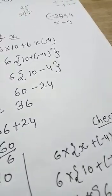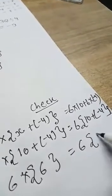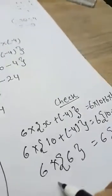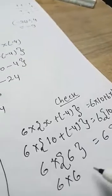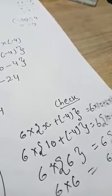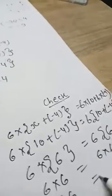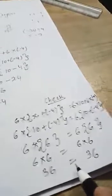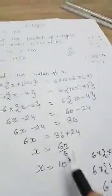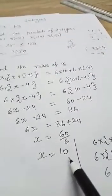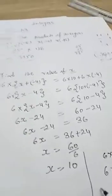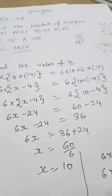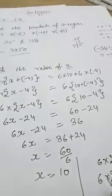6 multiply 6 is equal to 36. Left hand side and right hand side, both sides same answer. So your answer, find out value of x is 10, correct answer. Okay, thank you.